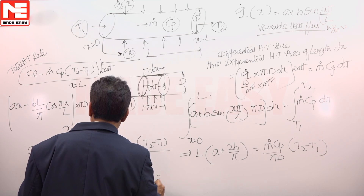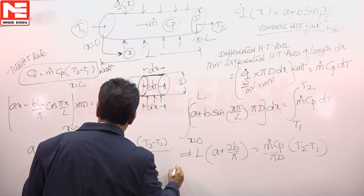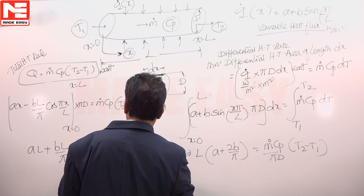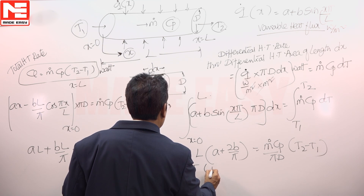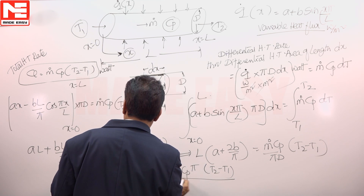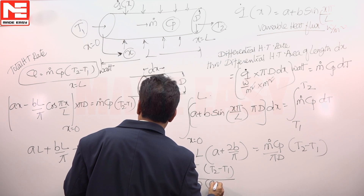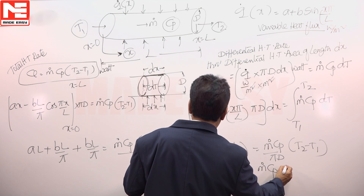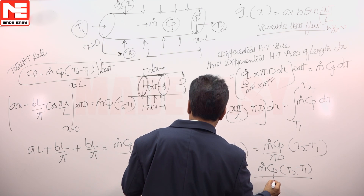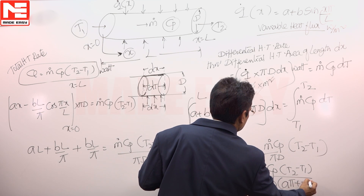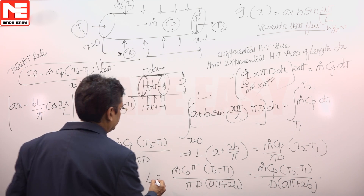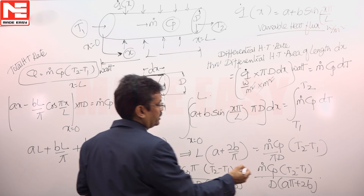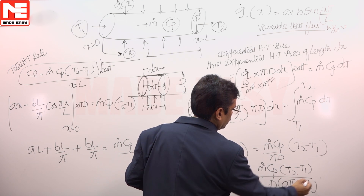Therefore, L equals ṁCp·(T2 − T1) divided by πD·(Aπ + 2B). This is the length of the pipe required to achieve the finite change in bulk mean temperature of the fluid from inlet to exit.